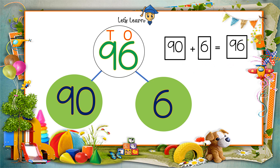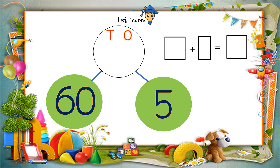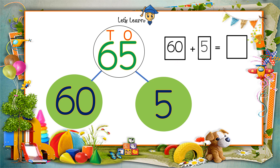Let's do another example of reverse order. The numbers given are 60 and 5. What will go in the 1s? 5 will go in 1s. And what will go from the 10s side? Only 6 will go up because 5 is already there. So 60 and 5 will be 65. Let's write the sum: 60 plus 5 equals 65. That's the correct answer.